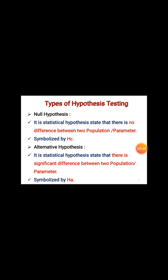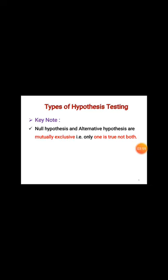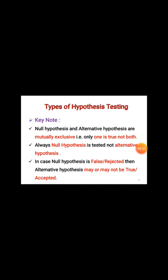The alternative hypothesis is symbolized as H_A. The null hypothesis and alternative hypothesis are mutually exclusive — that is, at a time only one is true and not both. For example, if the university result is considered to be 80%, then it may be exactly 80%, or the alternative hypothesis is that the result is less than or greater than 80%.